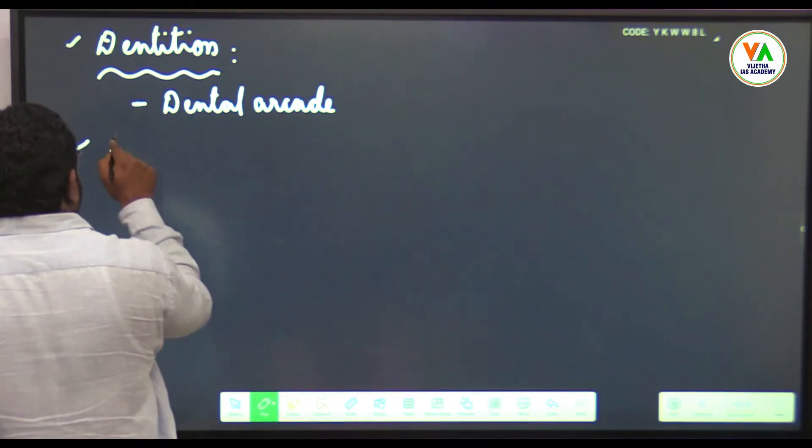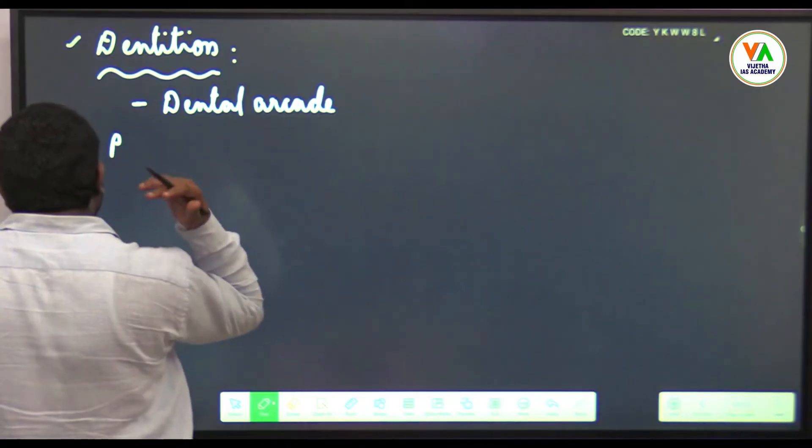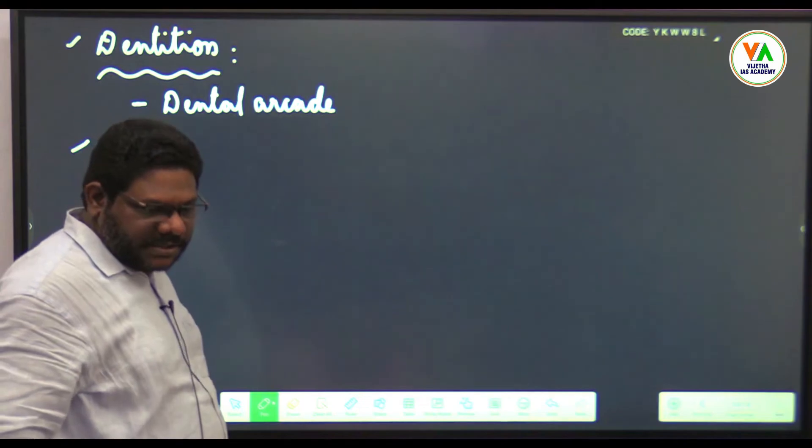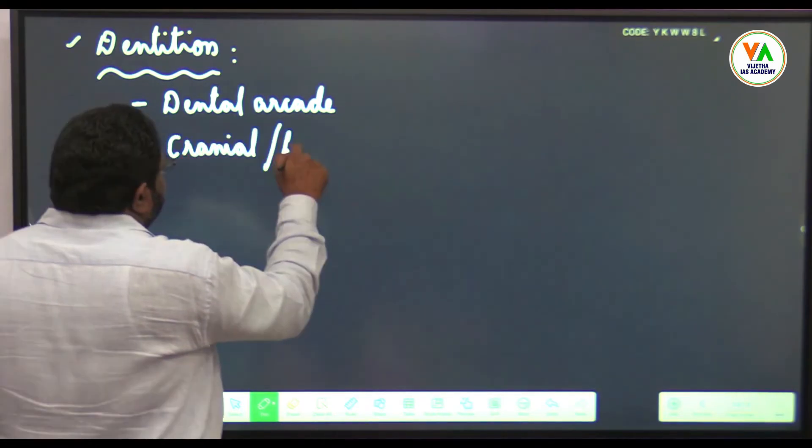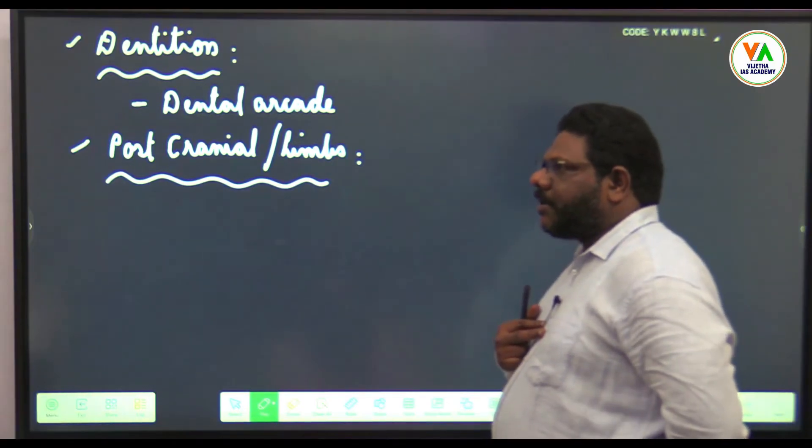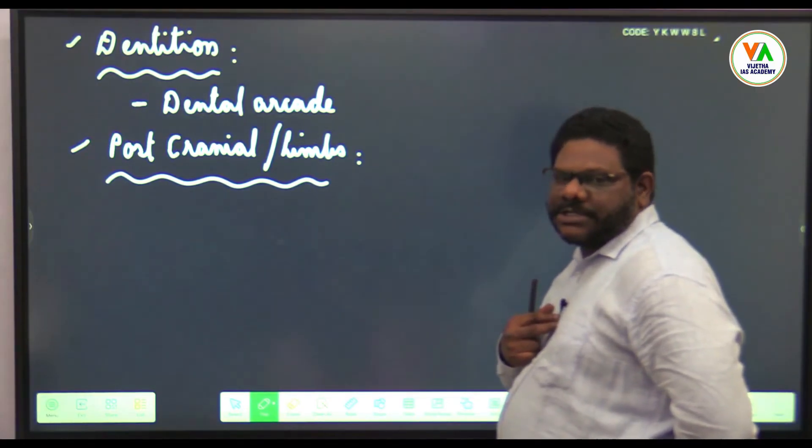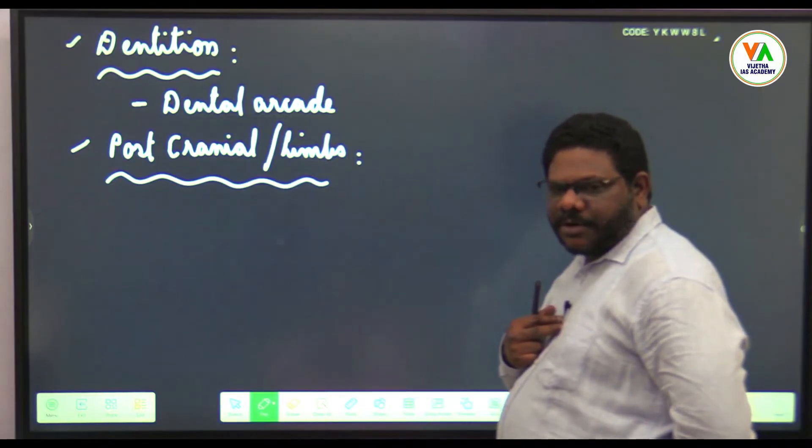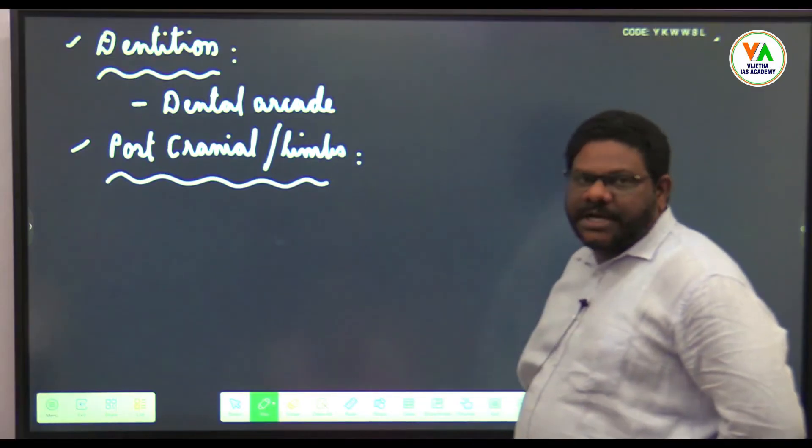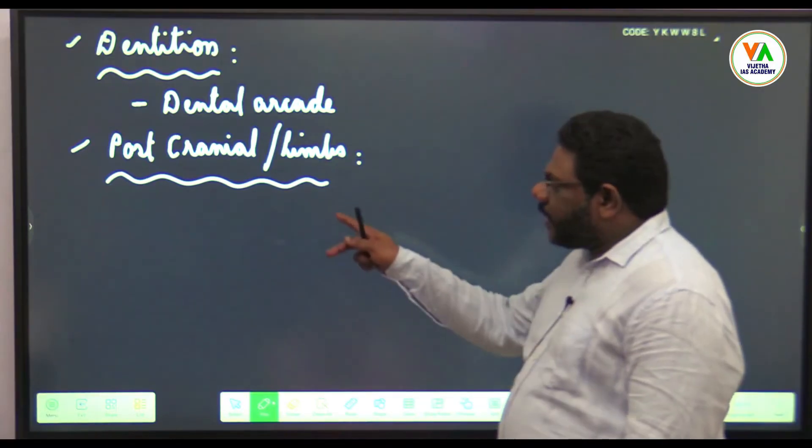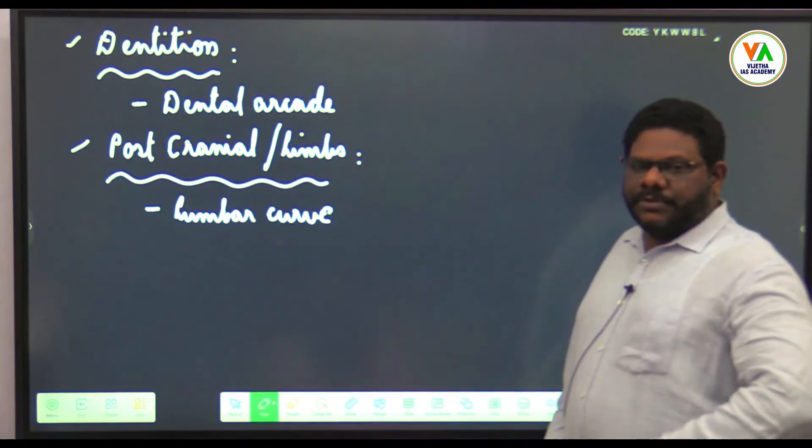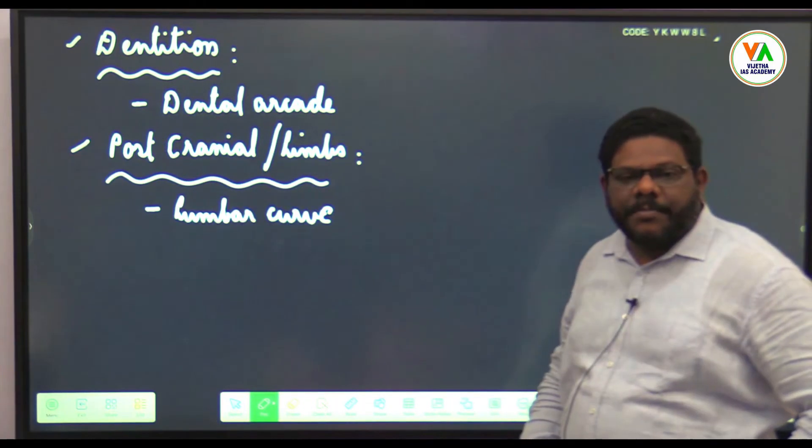Post-cranial remains or limbs—post means below the cranium. You have two curves: lumbar curve and thoracic curve. Lumbar curve pushes the body forwards, thoracic curve backwards. First time lumbar curve came into appearance. Pelvis broad and wide.